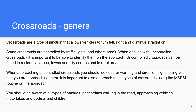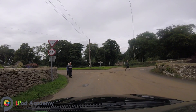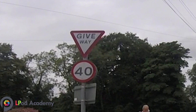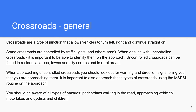Uncontrolled crossroads can be found in residential areas, towns and city centres, and also in rural areas. When approaching uncontrolled crossroads, you should look out for warning and direction signs telling you that you are approaching them. It is really important to approach these types of crossroads using the MSPSL routine. On the approach, you should be aware of all types of hazards — for example, pedestrians walking in the road, approaching vehicles, motorbikes, cyclists, and children.